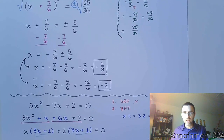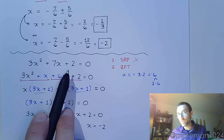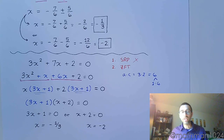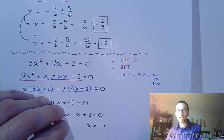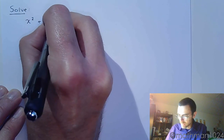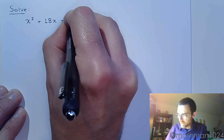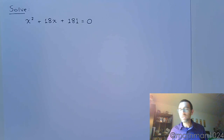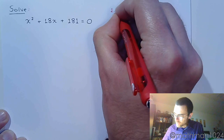The moral of the story: take the time to see if the polynomial will factor, because if it can, it's going to be much easier, faster, and cleaner than other methods. Now let's look at one more example as a palette cleanser: x² + 18x + 181 = 0. Feel free to pause the video and try to work it out on your own, then come back and check. Going through the progression: first, can we use the square root property? No — x appears in two terms.